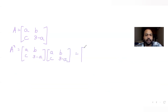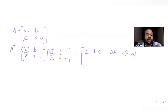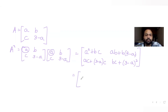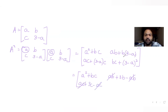So A² = A × A. The top-left element is a² + bc. The top-right element is ab + b(3-a), which simplifies to 3b. The bottom-left is ca + (3-a)c, which simplifies to 3c. The bottom-right is bc + (3-a)². So the four elements of A² are: a² + bc, 3b, 3c, and bc + (3-a)².